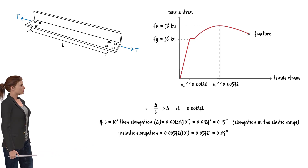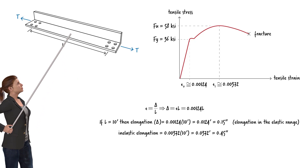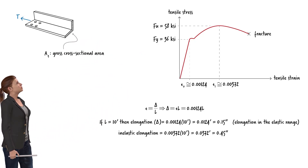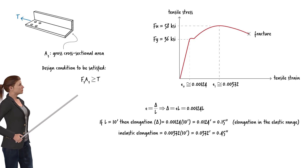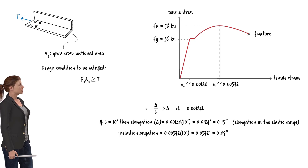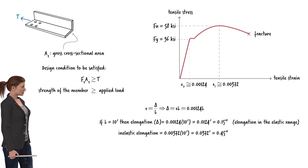For design purposes, we impose the following condition to limit the elongation of the member: the axial stress in the main part of the member, away from the connections, must not exceed the yield stress. If we refer to the gross area of the cross-section as A_g, we can write that Fy times A_g must not be less than the applied tensile force T. The left side is the tensile strength of the member; we are simply stating that the applied force must not exceed the member's strength.